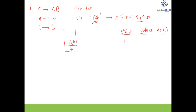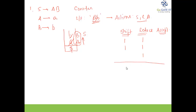Now 'a' can be replaced by capital A — that is a reduce action. The next symbol 'b' is moved to the stack, which is another shift action, and 'b' is reduced to capital B — another reduce action. Then A and B together can be reduced to S — one more reduce action. Total: two shift actions, three reduce actions, and one accept action — six actions in total.